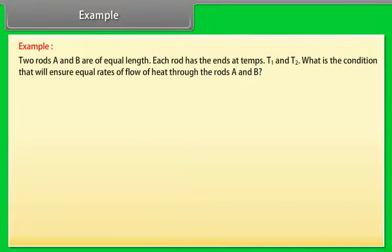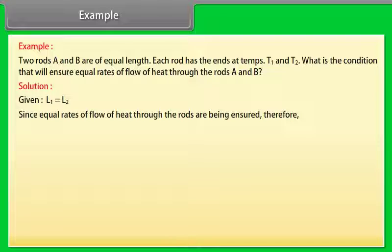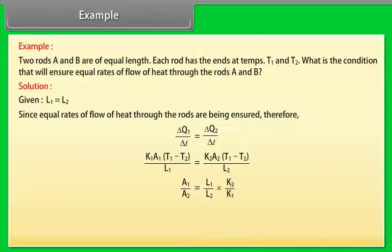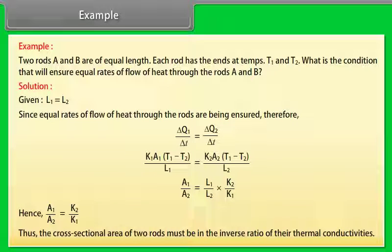Example: Two rods A and B are of equal length (L₁ = L₂). Each rod has ends at temperatures T₁ and T₂. What condition ensures equal rates of heat flow through both rods? Since ΔQ₁/Δt = ΔQ₂/Δt and L₁ = L₂, solving gives A₁/A₂ = (L₁/L₂)(K₂/K₁) = K₂/K₁. Thus the cross-sectional areas of the two rods must be in the inverse ratio of their thermal conductivities.